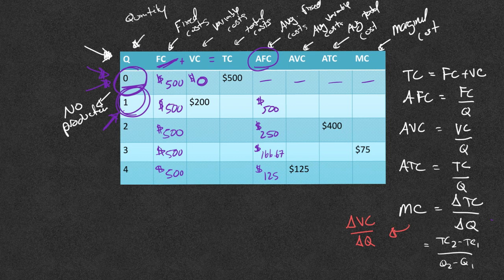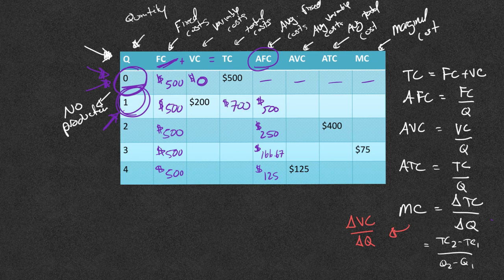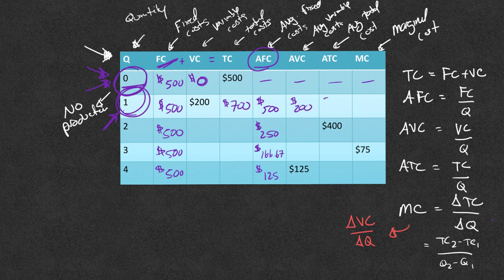And fixed cost plus variable cost is going to equal average total cost. That was the first equation I gave over here on the right. So what do we have? We have 500 plus 200. That's going to give us 700. And we can work all the way across now with our average total and average variable cost because this is just dividing by one. So my average variable cost is going to be 200. And my average total cost is going to be 700.